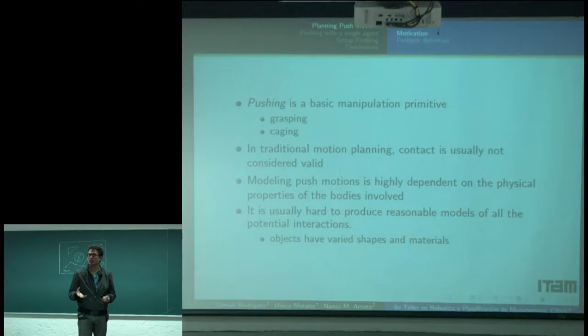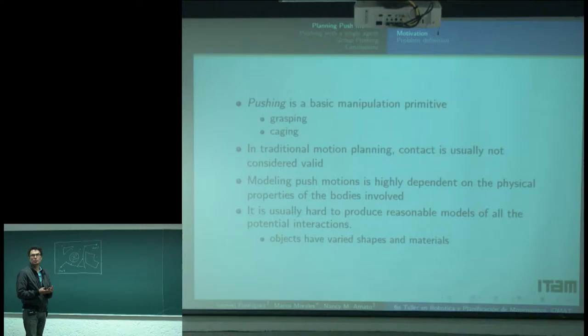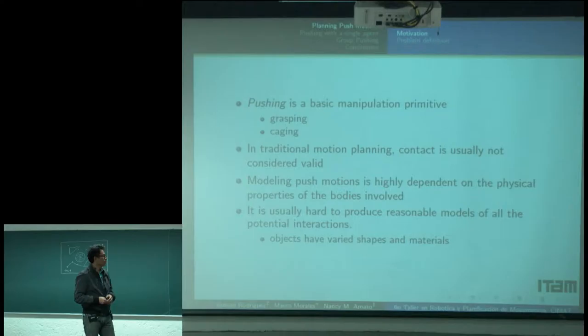Pushing is a basic manipulation primitive. We use it for grasping, and also for caging — it's used in many different settings. In traditional motion planning, contact is usually not considered valid because there is a collision between the robot and the obstacles, so we need to think about how to deal with that within the motion planning framework.